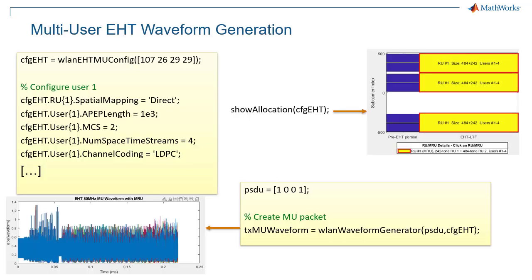Let us dive a little more into waveform generation and look at a multi-user example. In the case of multi-user transmission, every user may be experiencing different channel conditions, and as a result, every modulation encoding scheme may be different. Furthermore, the packet length can also be different, especially if the MCS values differ. So when you generate a multi-user transmission, you want to be able to specify all parameters for each user individually.